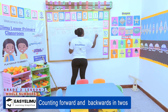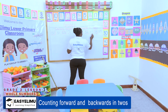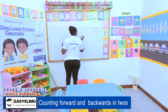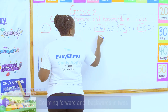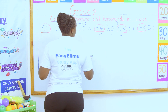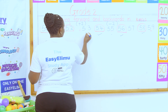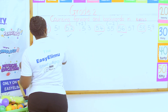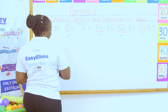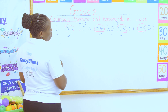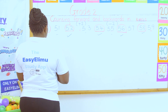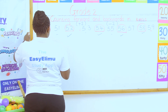Counting backward: 58, 57, 56, 55, 54, 53, 52, 51 and 50. So, what if I've been given a number like this?